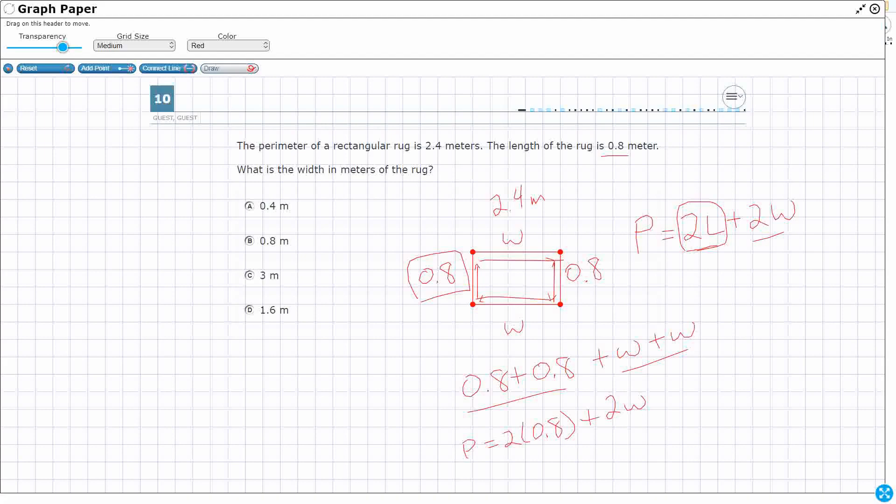So I've got two different Ws. But I also know what my perimeter is. They give us the perimeter. The perimeter is the 2.4. So let's write it like this. So I've got 2.4 meters equals, since that's my perimeter, double the length. Okay, so 0.8 times 2.